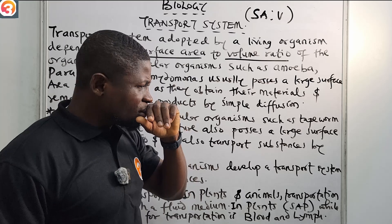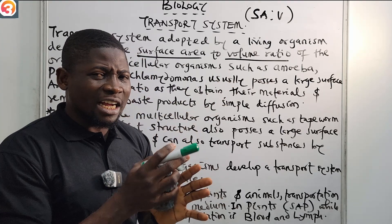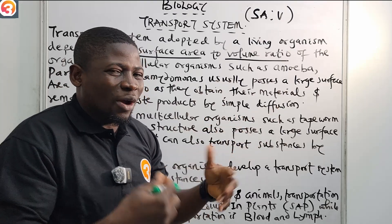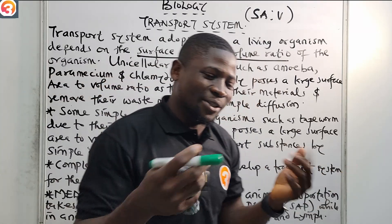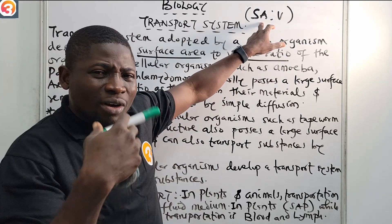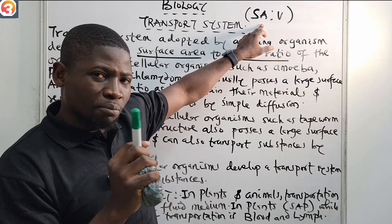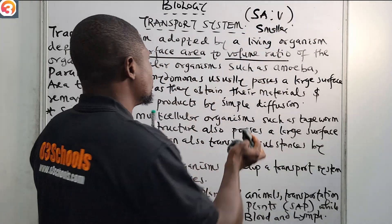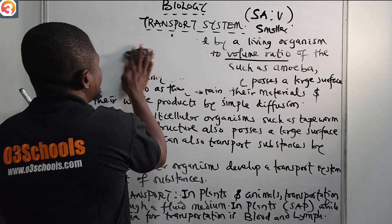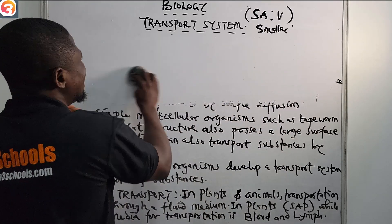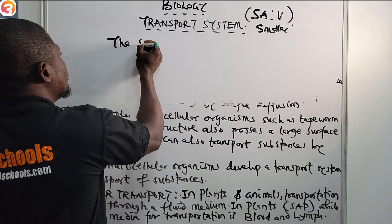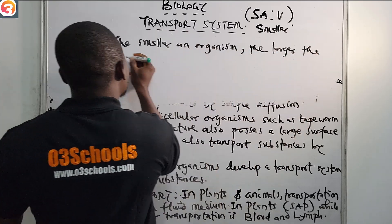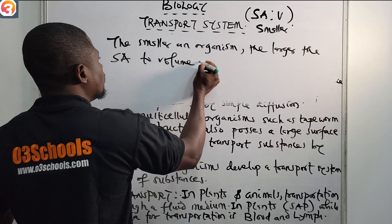Regarding the surface area to volume ratio: the exchange of oxygen and carbon dioxide in the body of these simple organisms is done by diffusion. These organisms can rely on diffusion for the exchange of oxygen and carbon dioxide. This means that the smaller an organism is, the higher the surface area to volume ratio. The smaller the organism, the greater or larger the surface area to volume ratio.